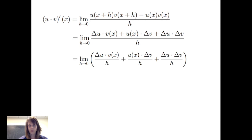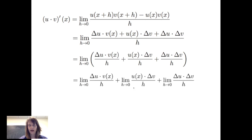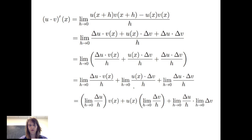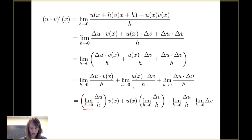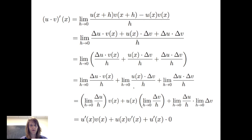I'm going to express that fraction as the sum of three fractions with the denominator of each fraction being h. And now I can use the limit laws — the limit of the sum is the sum of the limits. I notice that I've got the limit of delta u over h as h goes to 0 times v of x, plus u of x times the limit of delta v over h as h goes to 0, plus the limit as h goes to 0 of delta u over h times the limit of delta v as h goes to 0. In each of these pieces, this is the derivative of u, here we've got the derivative of v, and here again we have the derivative of u. So I can rewrite this expression as u prime of x times v of x plus u of x times v prime of x plus u prime of x times 0, because the limit of delta v as h goes to 0 is 0. So therefore we get the product rule.